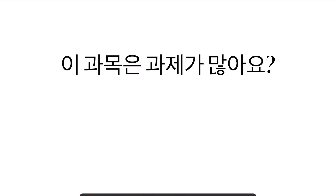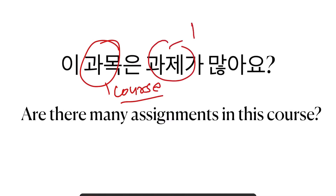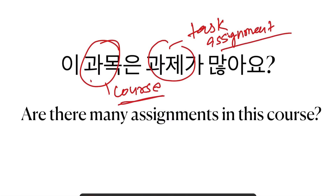이 과목은 과제가 많아요. 확인해 봅시다. 과목이라고 하면 course라는 의미에요. 과제라고 하면 task 아니면 assignment라는 뜻이죠. 그럼 이 course는 assignment가 많아요 — Are there many assignments in this course?